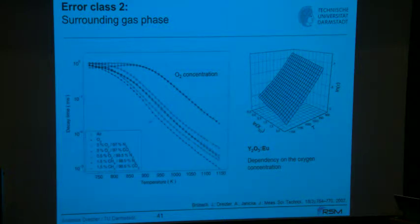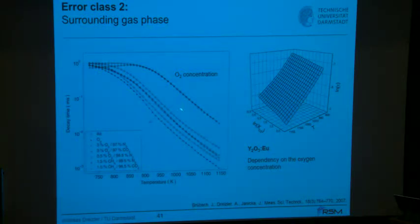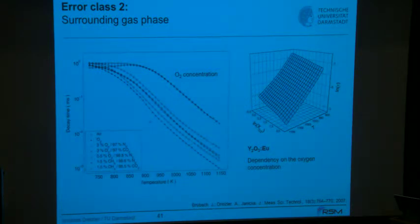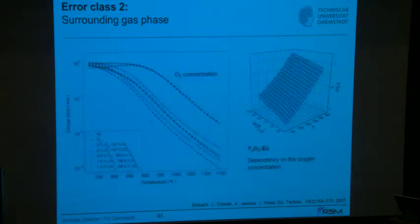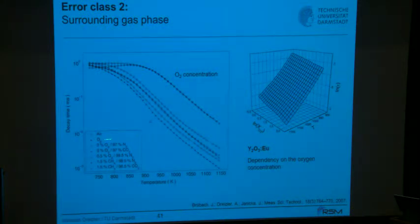A different phosphor, yttrium oxide doped with europium, shows oxygen quenching: the decay time changes with increasing oxygen concentration, so for a given temperature the decay time also depends on oxygen concentration. One could exploit this cross-sensitivity: use one phosphor that is insensitive to gas phase to measure temperature, then use this second phosphor and — knowing the temperature — derive oxygen concentrations and small variations of them. It functions somewhat like an optical lambda sensor.